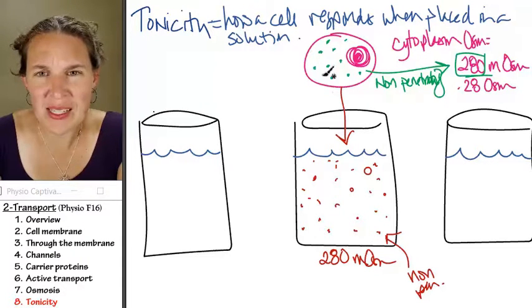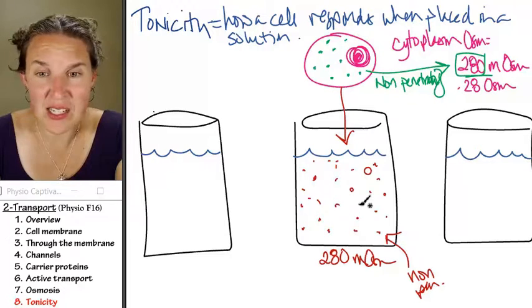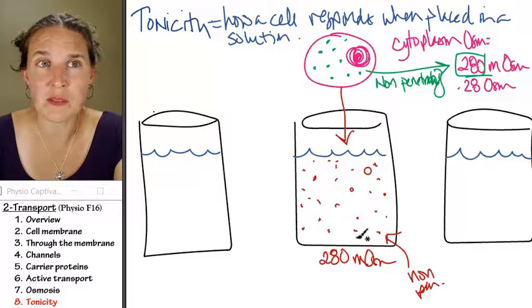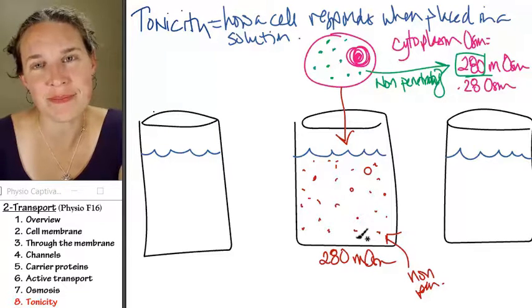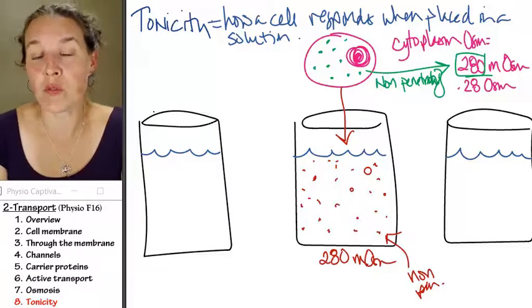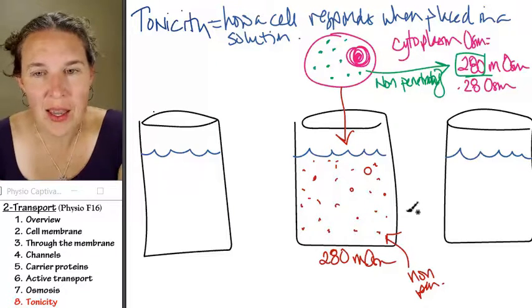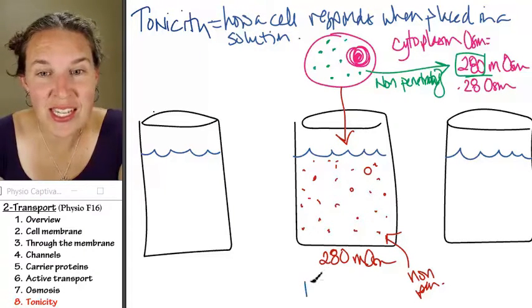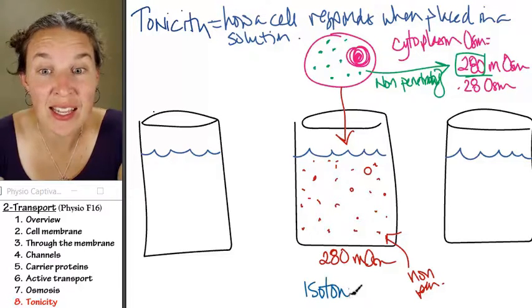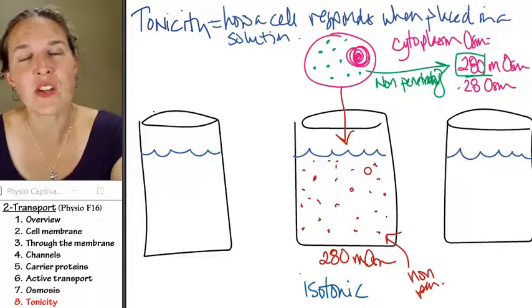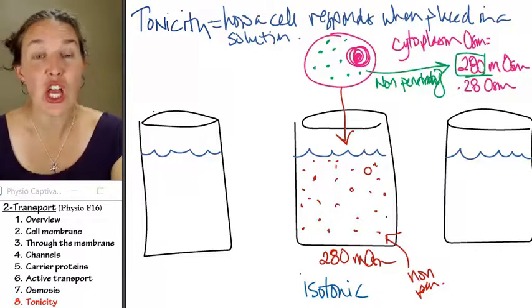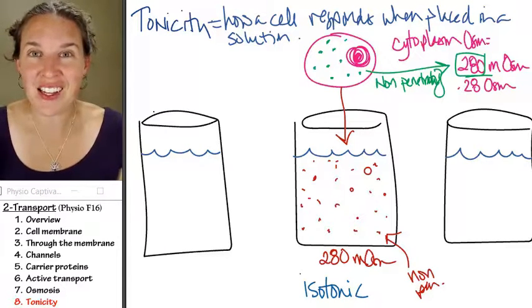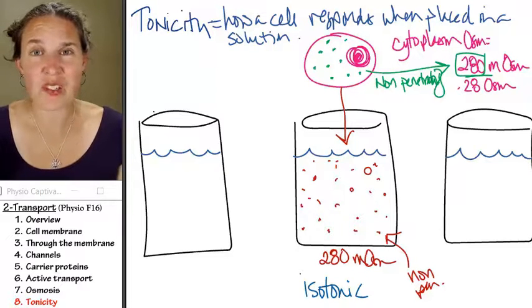But if we drop in this cell into these non-penetrating particles, what's going to happen? Is water going to move? No. There's going to be no movement of water. The concentrations are the same, and so this is actually an isotonic solution. There's no change in that cell. You want your extracellular fluids to be isotonic so that your cells don't swell.